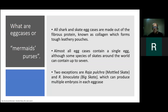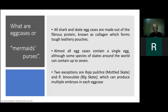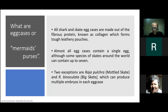All shark and skate egg cases are made out of the fibrous protein known as collagen — the same which creates our hair — which forms a tough, leathery pouch that protects the embryo as it develops. Almost all egg cases contain a single egg, although there are several species which contain more than one. For example, Raja pulchra, the mottled skate, and Raja binoculata, the big skate, can produce multiple embryos inside one case — the maximum recorded is seven.